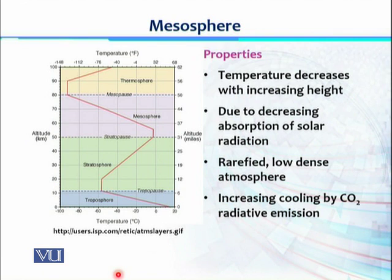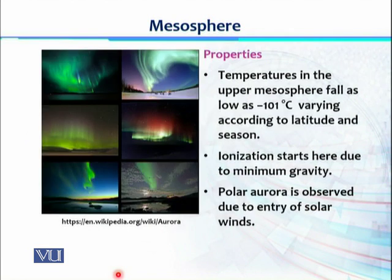These are the factors behind the increasing cooling in the mesosphere. The temperature in the upper mesosphere can be as low as -101 degrees centigrade, and this varies with different seasons and different latitudes.